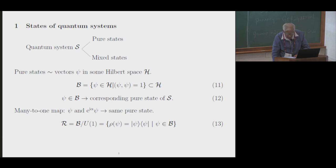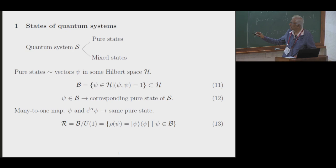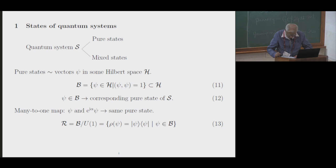Dynamical variables — that is, physical quantities which could be measured — are represented by Hermitian operators acting on this Hilbert space. Each normalized vector psi in the Hilbert space determines a corresponding pure state. So it is useful, because of the normalization condition, to define the unit sphere in the Hilbert space, which I denote by script B. It consists of all vectors in the Hilbert space with norm unity. To each vector psi in script B, there is a corresponding pure state of the system.